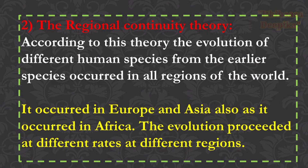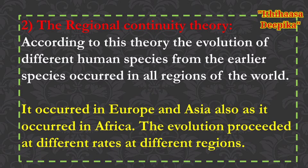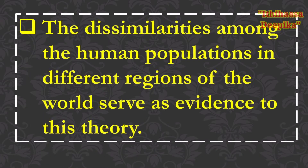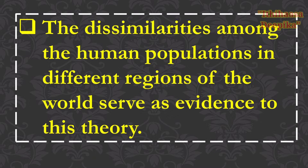According to the regional continuity theory, the evolution of different human species from earlier species occurred in all regions of the world — in Europe and Asia as well as Africa — proceeding at different rates at different stages. The dissimilarities among human populations in different regions of the world serve as evidence for this theory.